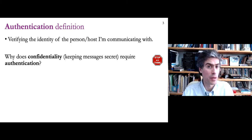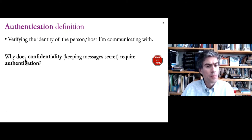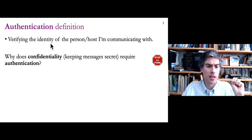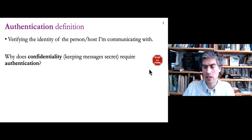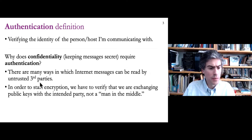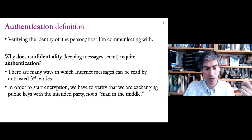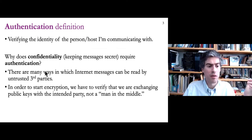We expect them to be trustworthy on the whole, but any one router or small set of routers could be acting maliciously. We want authentication primarily to protect confidentiality — keeping your messages secret. Why do we need to verify the identity of the person we're communicating with to keep messages secret? We want to verify not just that our message can only be read by a particular party, but that that party is the one we intended. Man-in-the-middle attacks are ways that we subvert confidentiality if authentication is not protected.